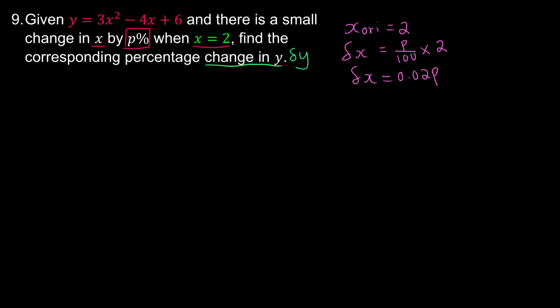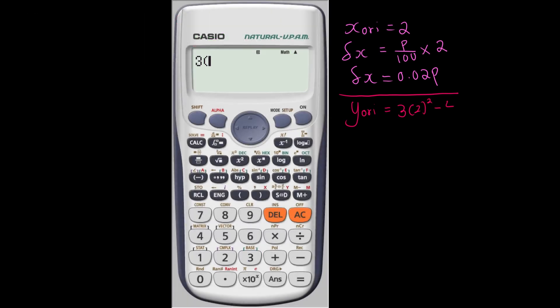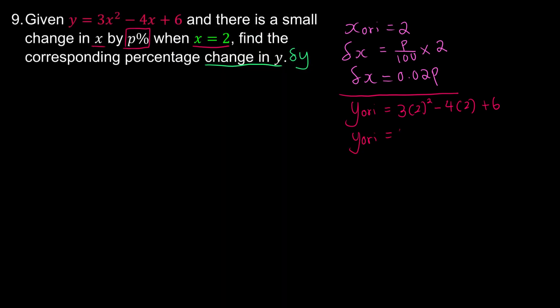If they say how many percent, we just put it on top of the fraction of 100. Next, I want to find y original by substituting x original into the equation, which is 3 times 2 squared minus 4 times 2 plus 6. If you plug it into your calculator, you will get 10.